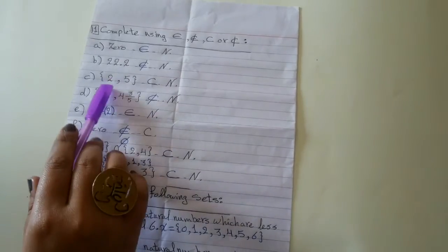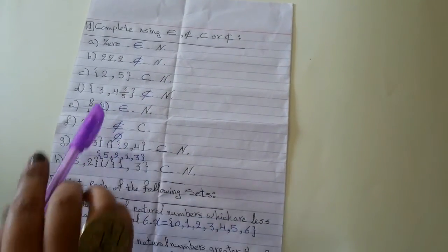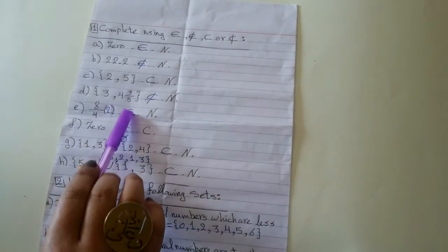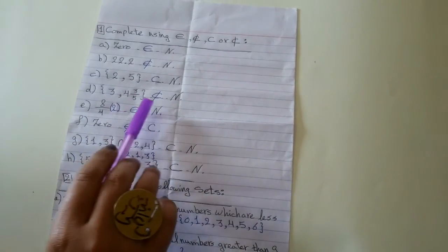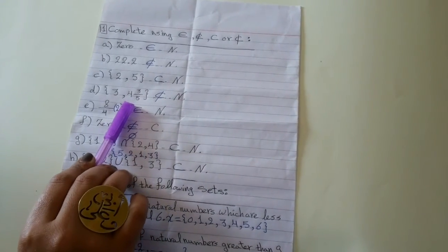Number C, 2 and 5, subset of N. Number D, 3 and 4 and 3 fifths, not subset of N because we have a fraction number here.